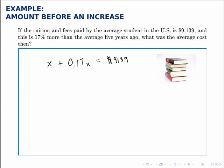So the original amount plus the 17% is the amount it is today. I can combine the left side, I can combine these like terms, and get 1.17x equals 9,139.